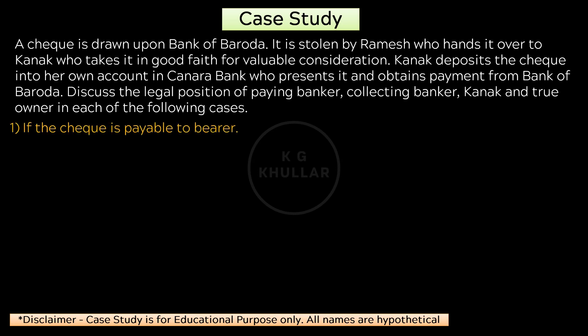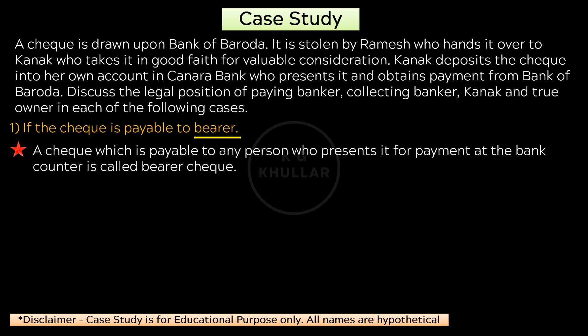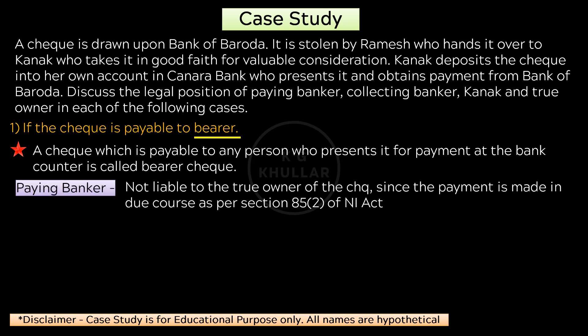The first case is if the check is payable to bearer. A check which is payable to any person who presents it for payment at the bank counter is called a bearer check. In this case the drawee, that is the paying banker, is discharged and is not liable to the true owner of the check, since the payment is made in due course as per section 85/2 of the Negotiable Instruments Act.